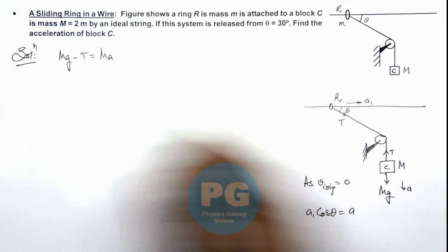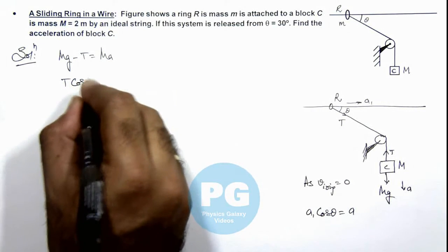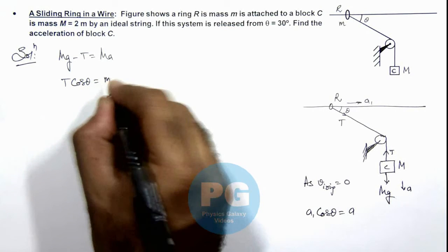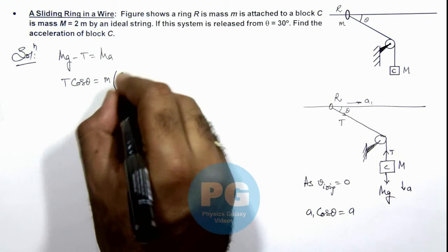And for string we can write it is T cos theta because of which it will move, so T cos theta is equal to its mass multiplied by the acceleration ay1 which is ay by cos theta.